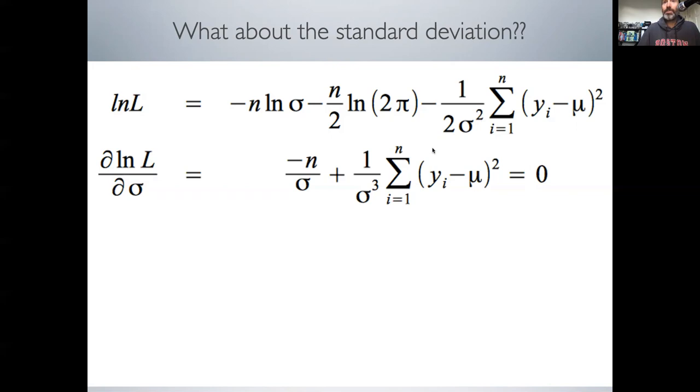The whole summation—the sum of squared errors—is just a constant relative to sigma. We set this equal to zero and solve.